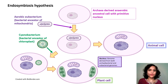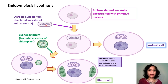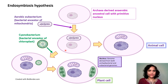Coming to the origin of eukaryotes, it is believed that they arose from a predatory cell such as an archaea-derived anaerobic ancestor that engulfed an aerobic eubacterium, which later evolved into mitochondria. Another similar event was the acquisition of cyanobacteria from this derived cell.